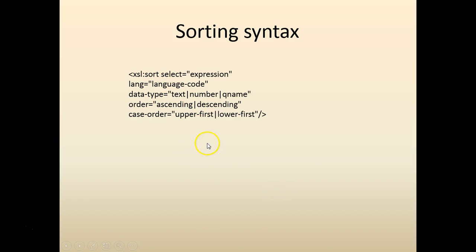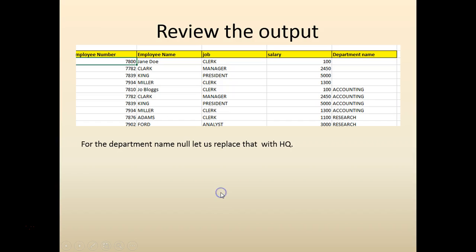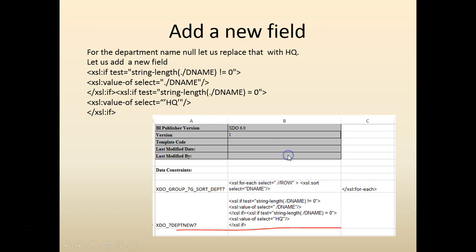The sorting syntax is similar to the XML template, and I've included it here. We can replace the current group output. For the condition, if the department name string length is not equal to zero, then we select the department name. If the string length is equal to zero, we select the value 'HQ' — I replaced it with 'main department', but you can change it to HQ if you want. Let's go ahead and add a new field with this if-condition and add it.